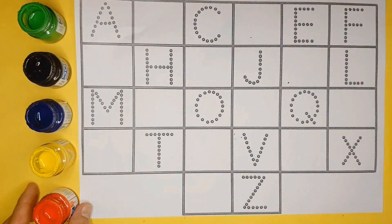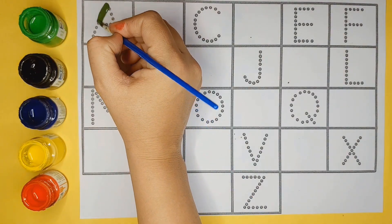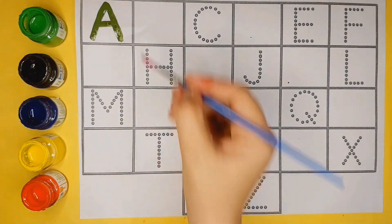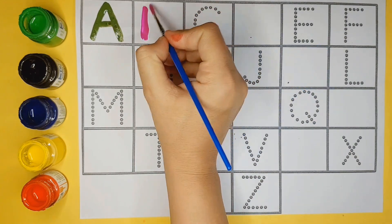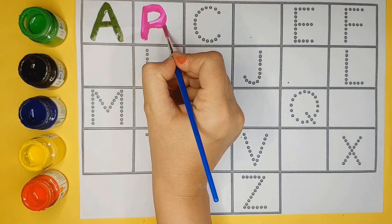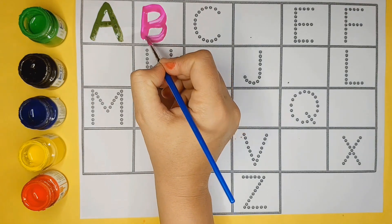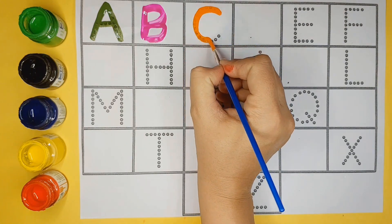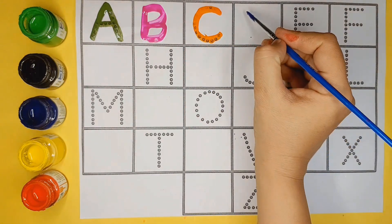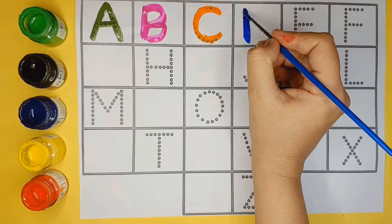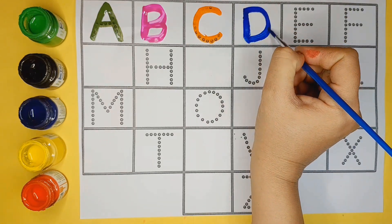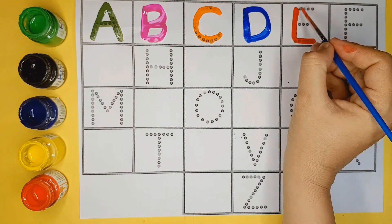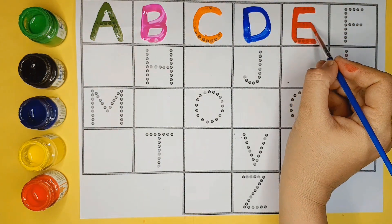A for aeroplane, B for bus, C for car, D for duck, E for eagle.